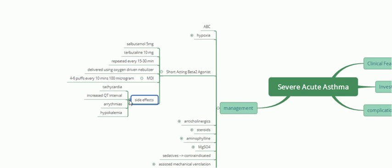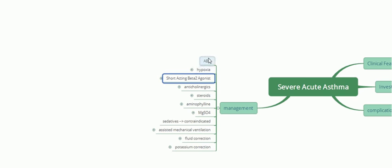Side effects of SABA given every 15 to 30 minutes include tachycardia — ECG may show sinus tachycardia — increased QT interval, and arrhythmia. Extremely important is hypokalemia, so serial electrolyte monitoring is required. Potassium levels must be maintained, as hypokalemia has serious effects on muscles and the heart. Salbutamol is particularly responsible for hypokalemia.